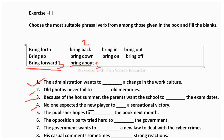Fourth: 'No one expected the new player to dash a sensational victory.' 'Bring off' means to escape or lose something — correct answer is 'bring off.' Fifth: 'The publisher hopes to dash the book next month.' Publishers launch books, so 'bring out' means to launch or produce something. The correct answer is 'bring out' — the publisher hopes to bring out the book next month.